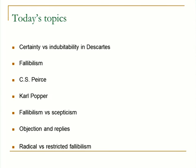I'll introduce fallibilism and look at a couple quick examples of fallibilism. Peirce and Popper are two big names in establishing the fallibilist view. I'll contrast fallibilism with skepticism, look at some objections, and then distinguish between a more moderate fallibilism and a full-blown fallibilism.